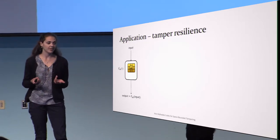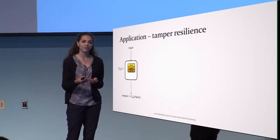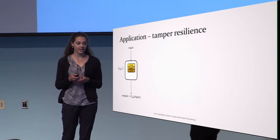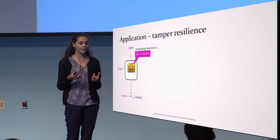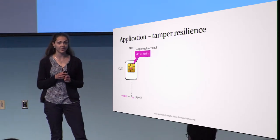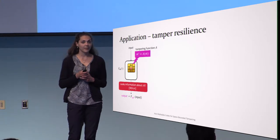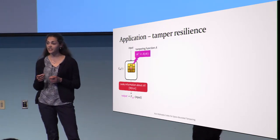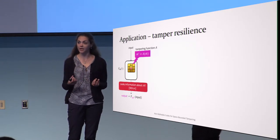What are non-malleable codes good for? Assume we have a device that executes some cryptographic functionality, for example digital signature, and the secret key is stored in the memory of the device. If someone tampers with the device by applying a tampering function to the memory contents, the secret key SK gets tampered to SK', and the input-output behavior can reveal information about the original secret key. This was demonstrated by Boneh, DeMillo, and Lipton in 2001 by the famous fault injection in RSA digital signature — they showed that injecting a single random fault reveals the entire secret key.